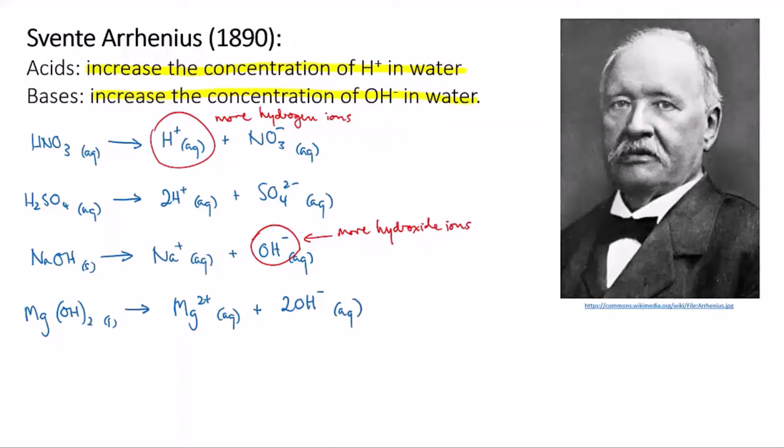However, Arrhenius' definition runs into problems when you probe a bit more deeply. Because what about ammonia? Ammonia has the formula NH3. And if you play around with it, you find that it has the properties of a base. But how does it increase the concentration of hydroxide in water? It has no hydroxide ions in it. So Arrhenius' definition was clearly incomplete and it needed some further work.